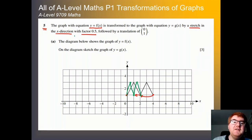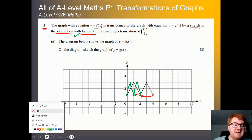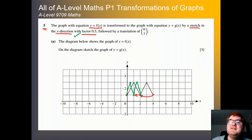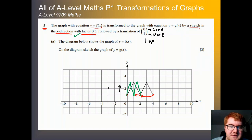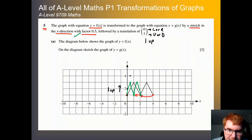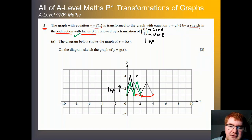However, we're not finished — we've done the first part. Now we need to do the translation in a different colour. The vector is (0, 1). Remember, the top tells you left and right, and the bottom tells you up or down. Because this is positive, we need to go 1 upwards. So we take our green function and shift everything 1 upwards. This point comes to here, this point comes to here, and so on.